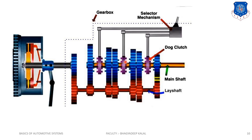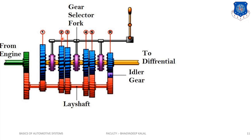The function of the dog clutch is to prevent relative motion between the gear and the main shaft, since the gear is freely rotating on the shaft with the help of bearings and bushes. This is the gear selector mechanism. Gears one, two, three, four, five, and reverse are engaged. Power from the engine goes to the clutch gear and transfers to the lay shaft. These gears are always in contact — that is why it is known as a constant mesh gearbox.